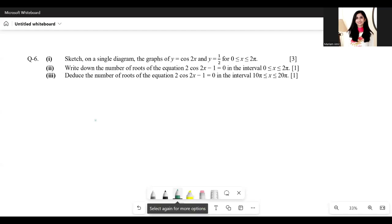This question says sketch on a single diagram the graph of y equals cos 2x and y equals half for the given domain 0 to 2π.